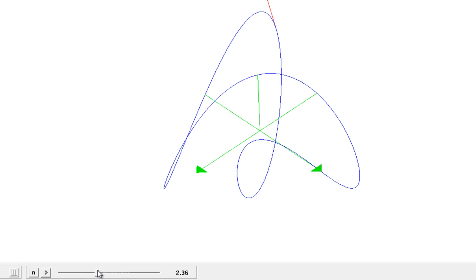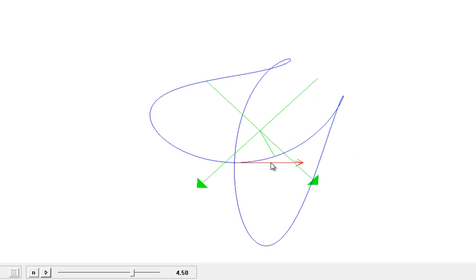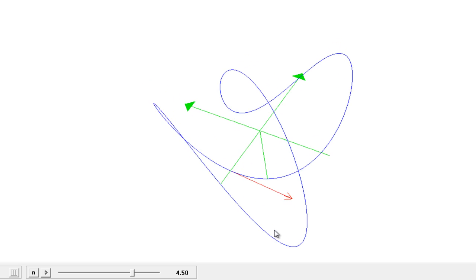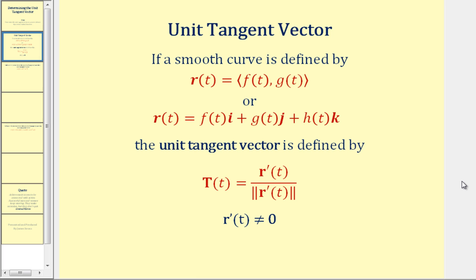This red vector is a unit tangent vector. To determine the unit tangent vector — whether we have a plane curve or a space curve defined by r of t — the unit tangent vector is defined by the derivative of r of t divided by its magnitude. We find the derivative of the vector valued function and then normalize it, giving us the unit tangent vector valued function.